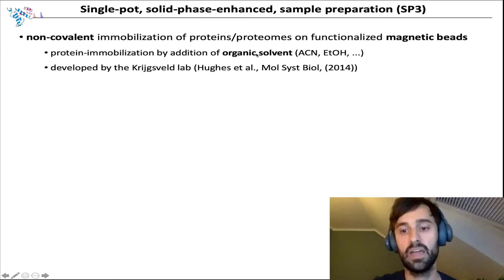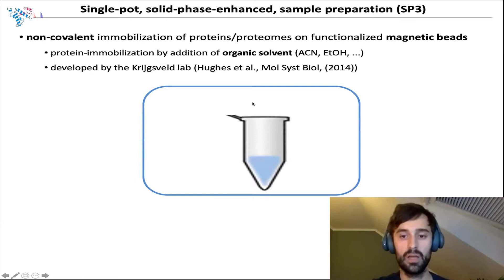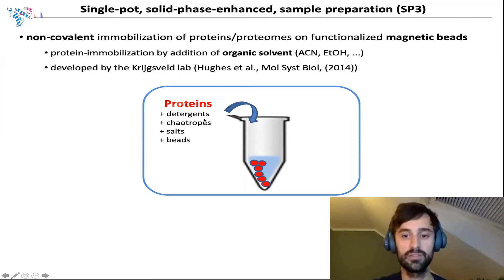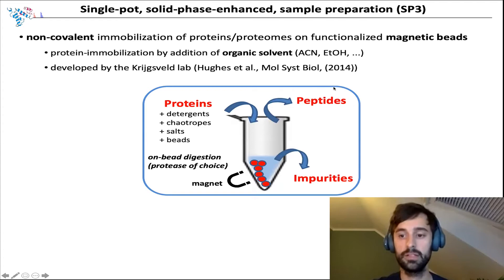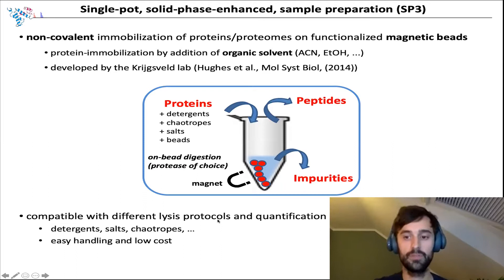How does SP3 work? You have your proteins — let's say a lysate — with all kinds of contaminants, especially detergents and chaotropes. To these you add your beads. By using a magnet, we can immobilize the beads and rinse them with organic solvent, removing all the contaminants. You then add your enzyme of choice, and after digestion obtain a clean digest. The great thing about SP3 is that you can use it for a variety of lysis protocols, it is easy to do, relatively cheap, and importantly, it has been shown that you can process very small protein samples.